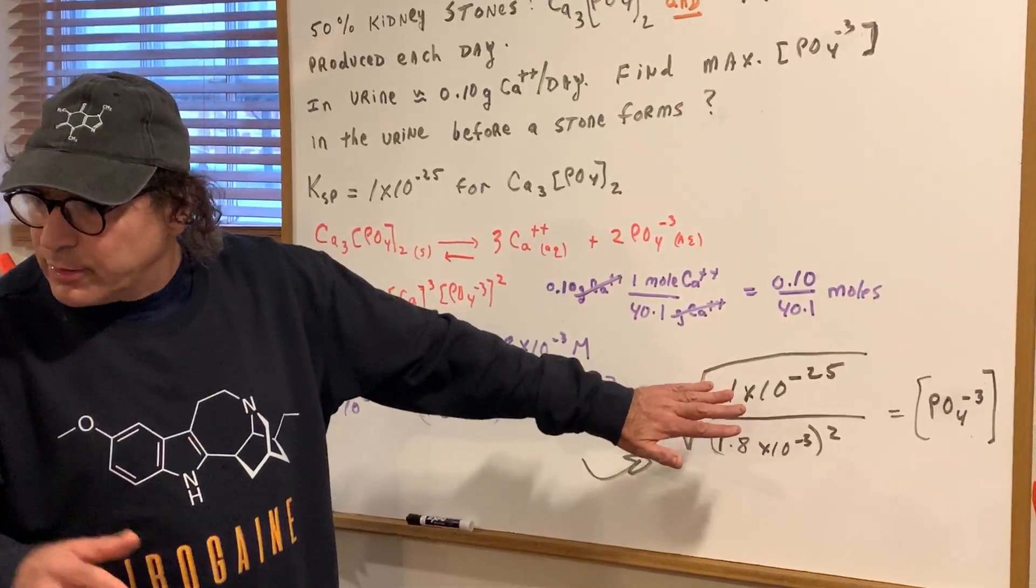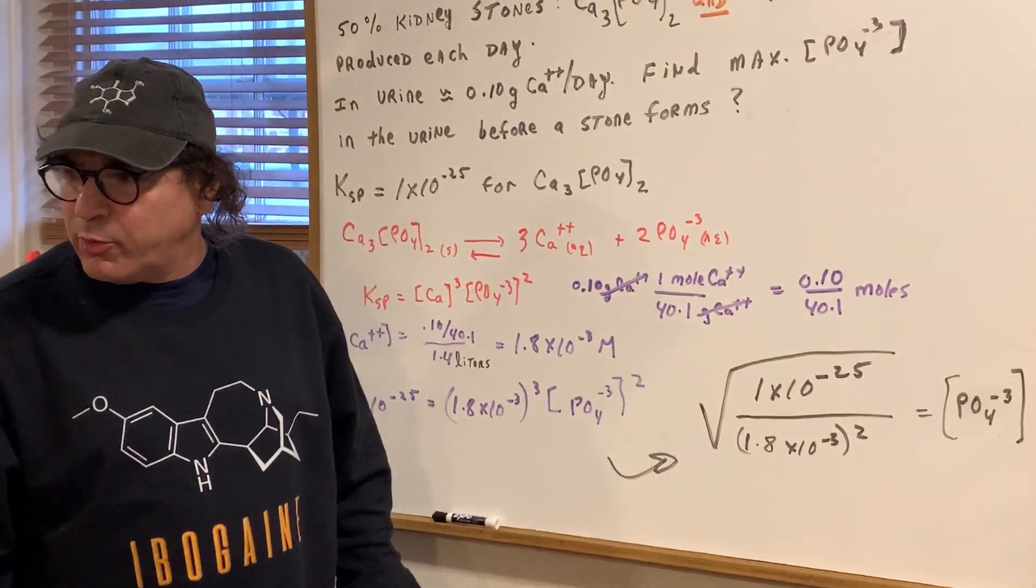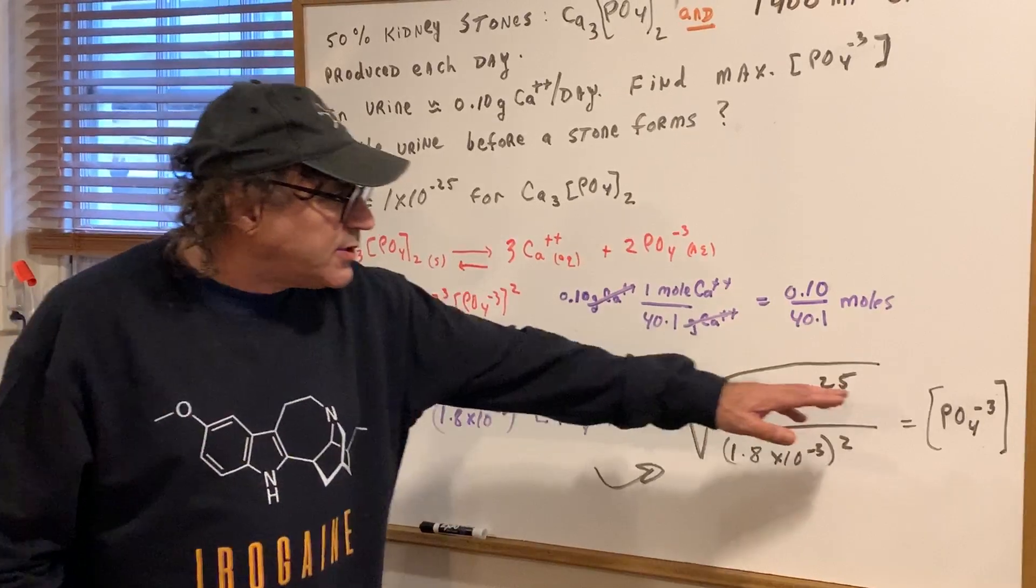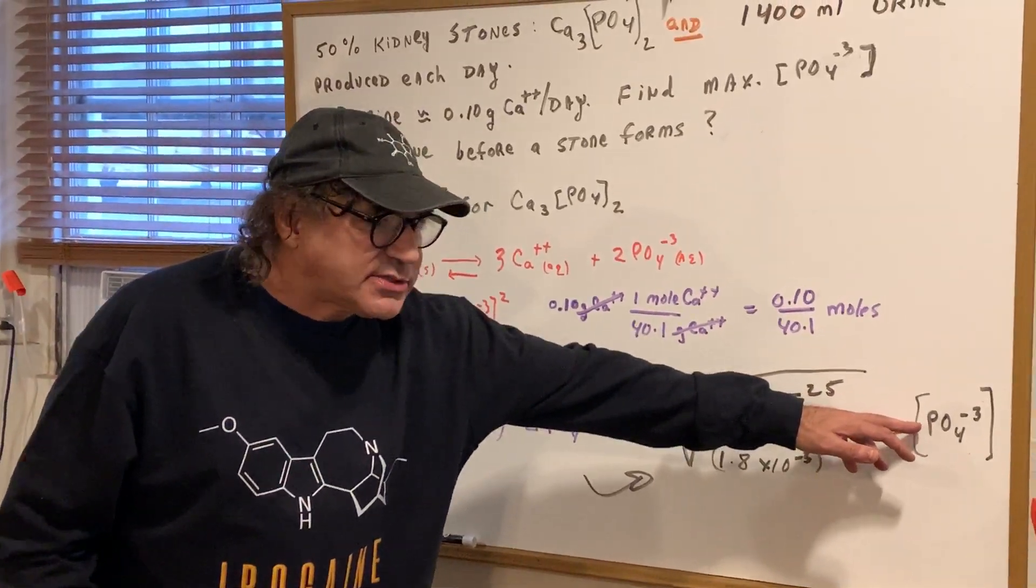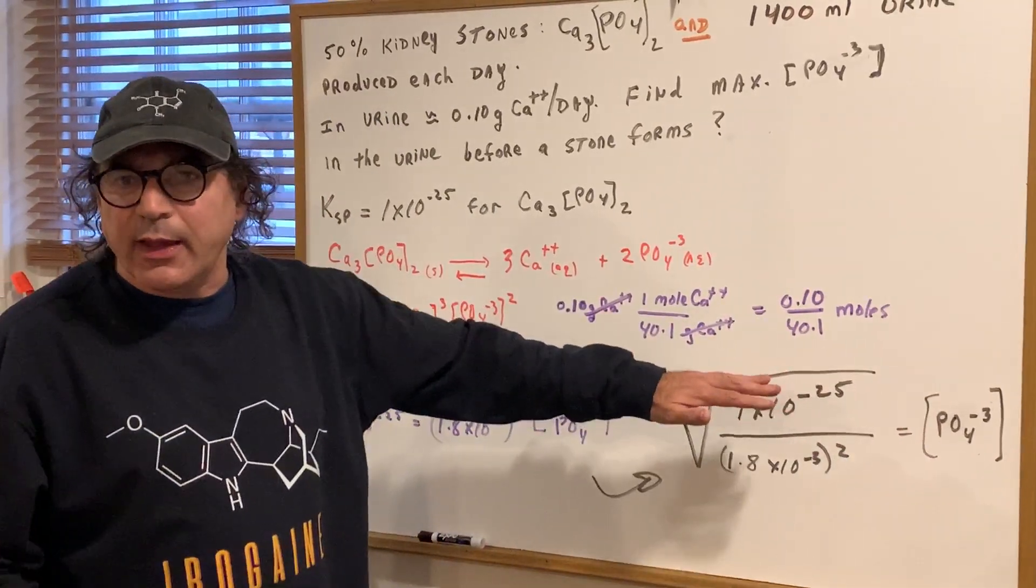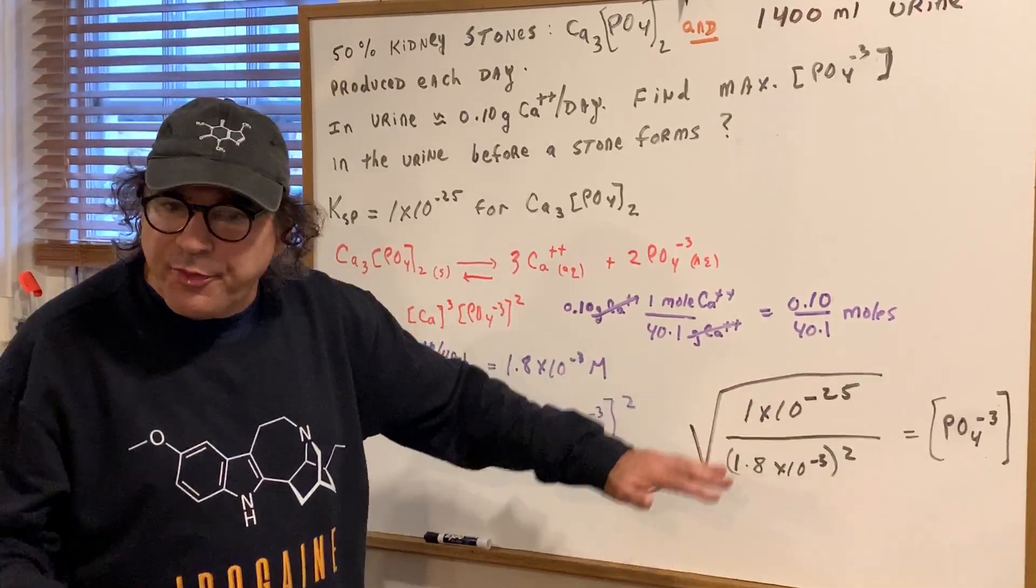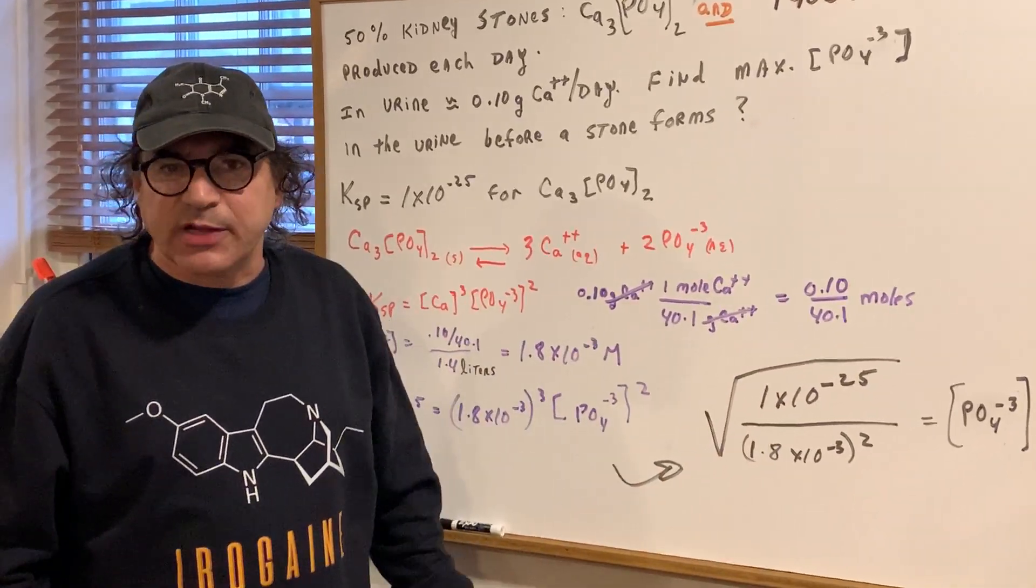That's the amount of phosphate that you have to exceed. Anything beyond this amount would cause a stone to form. So you want to make sure you understand that that's the amount that causes a saturated solution. Anything beyond that point, if that's exceeded, then we get precipitation.